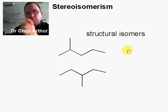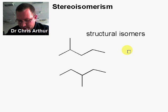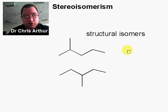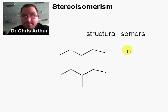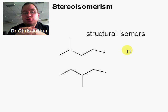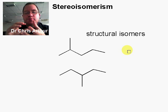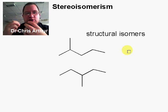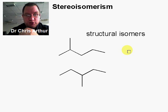Now, we're not thinking about structural isomers today. What we want to talk about is what's called Stereoisomers, which have the same bond connectivity but have a different three-dimensional shape.